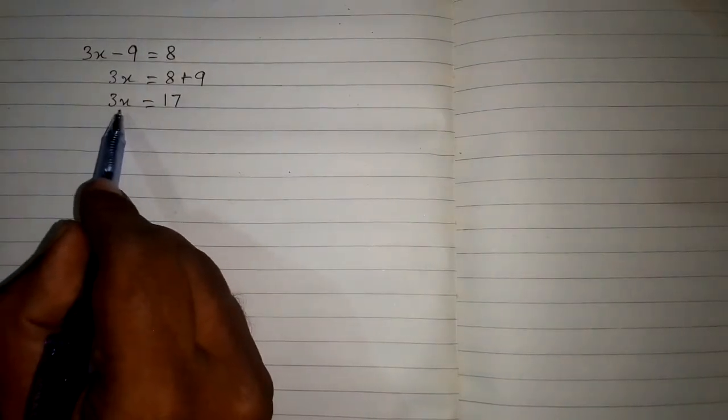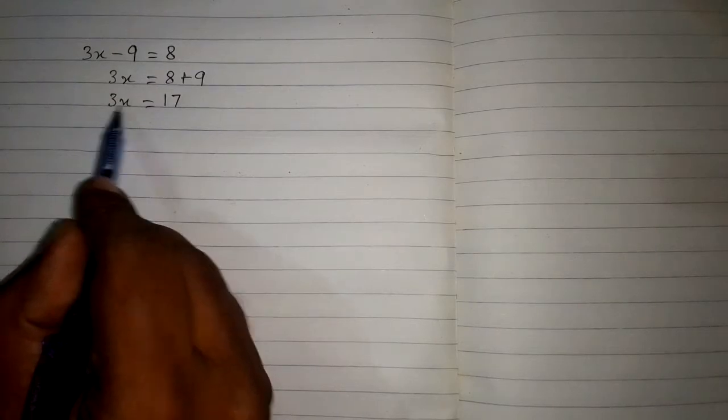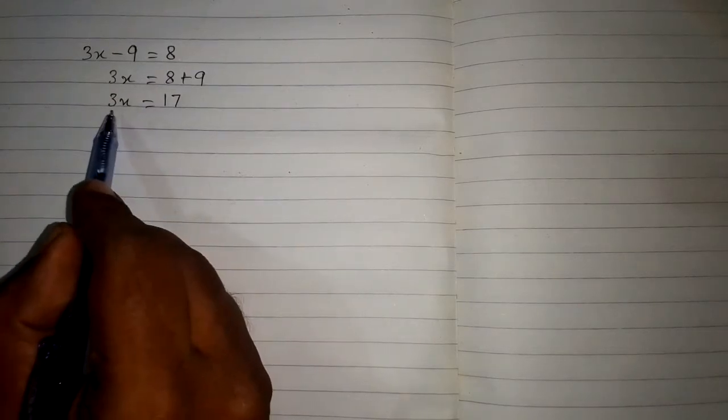3 is multiplying on this side, so when we take this 3 on the other side of equation, this 3 will divide 17. So we have x is equal to 17 upon 3.